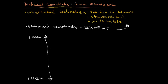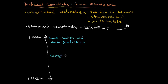Woodward's theory identifies ten levels divided into three categories. We begin with small batch and unit production, then move to large batch and mass production, and finally we get to continuous process production, which is perhaps the most interesting one.